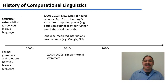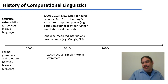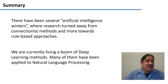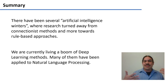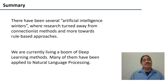On the formalization side, most research nowadays is in numerical-based machine learning. However, progress has been made in trying to get simpler formal grammars, and we'll see if these two fields can merge in the future. In summary, there have been several artificial intelligence winters. Research turned away from connectionist or numerical methods toward rule-based approaches at times, but the moment we're in right now is a boom of deep learning methods, and people have applied many of them to natural language processing, as we will see in the following weeks.